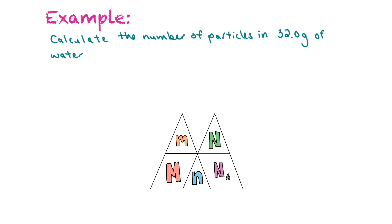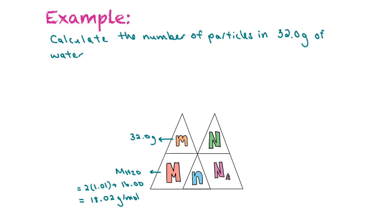In the example we're going to work with, we're asked to calculate the number of particles in 32 grams of water. I like to write down what I know. The mass of the water is 32 grams. We can find the molar mass of water — that's equal to 2 times the molar mass of hydrogen plus the molar mass of oxygen, which equals 18.02 grams per mole. We always know Avogadro's constant: 6.02 times 10 to the power of 23.